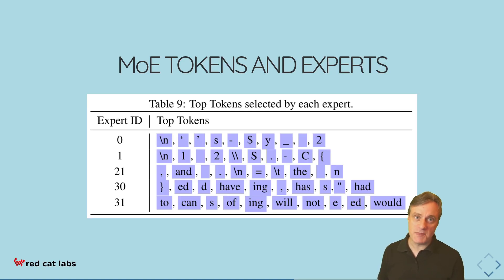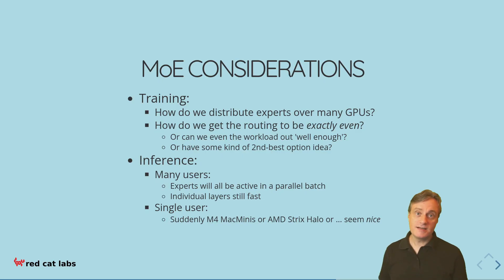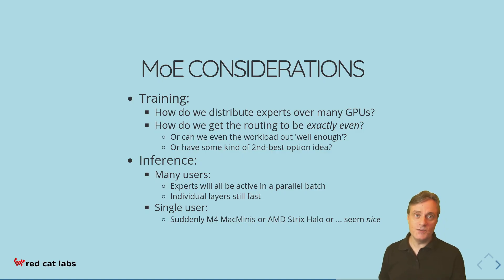There are also other issues to do with training and inference worth mentioning. When training with batches of data from lots of different sources, how do you distribute the experts amongst your GPUs? Clearly we don't want some GPUs to be idle, which suggests making sure the routing balances the load amongst different machines just as it balances between experts. But getting that balancing exactly even is difficult — you may have to accept some lower-than-optimal allocation, or explore second-best load balancing options, or something more sophisticated.